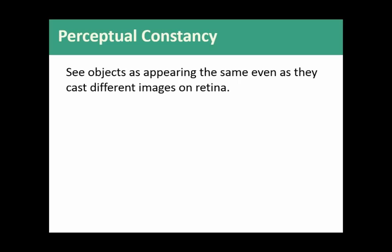Perceptual constancy refers to the fact that we see objects as appearing the same even when they cast different images on our retina. Our assumption, based on our models and our experience in the world, is that the world is constant — that things don't just randomly change size or color, that things are pretty stable. Sometimes the light reflecting off something might give us an incorrect impression, or our distance from something, or the presence of fog, can interfere with how something appears, but the thing has not really fundamentally changed.